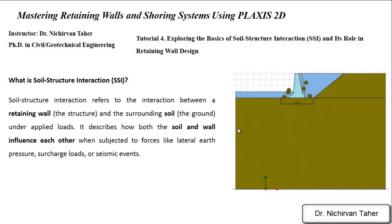What is soil-structure interaction (SSI)? The soil-structure interaction is the interaction between the retaining wall — or any structure in contact with the soil — and the surrounding soil or ground under applied loads. It describes how the soil and the wall influence or affect each other under different types of forces like lateral earth pressure, surcharge loads from vehicles, or external loads.